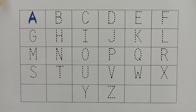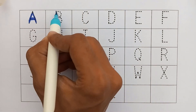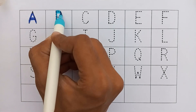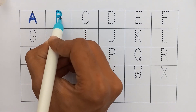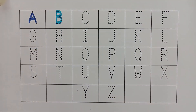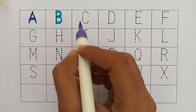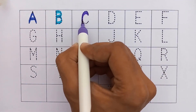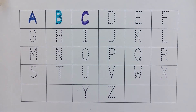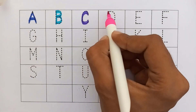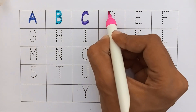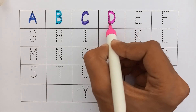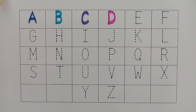A. A for Apple. B. B for Ball. C. C for Cat. D. D for Dog.